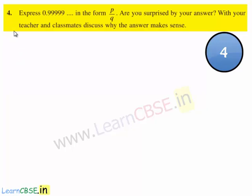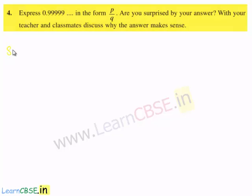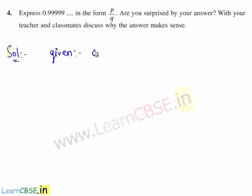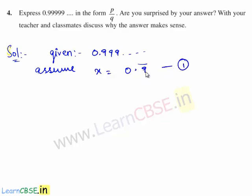Now let us move on to the fourth question. The question is: express 0.999 and so on in the form of p by q. Are you surprised by your answer? Discuss with your teacher and classmates why the answer makes sense. Let us go for the solution. We shall express 0.999 and so on in the form of p by q. Let us assume x is equal to 0.9 bar. Consider this as equation 1. Since one digit is repeating, we multiply equation 1 with 10.